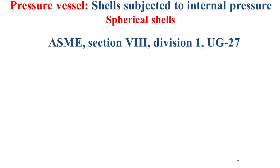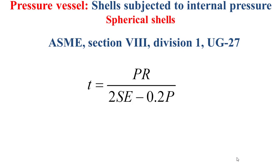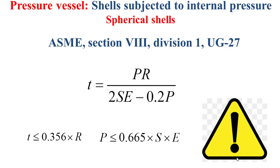As stated before, P, R, S, and E are defined as explained for the cylindrical shells. For spherical shells, this formula is valid only when the thickness does not exceed 0.356 × R, where R is the internal radius of the shell, and the design pressure P does not exceed 0.665 × S × E.